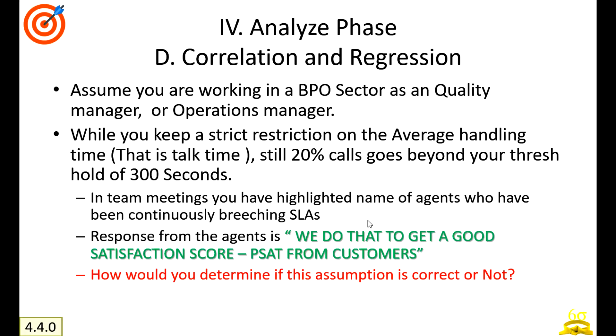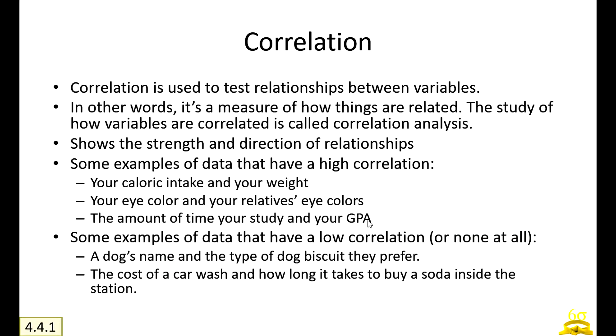In team meetings, you have highlighted names of agents who have been continuously breaching the SLAs. Most often the agents respond by saying, 'We do that to get a good satisfaction score. Customers give us good ratings when we talk to them more and solve their problems.' How do you determine if this assumption is correct or not? That is what exactly correlation will help you to do.